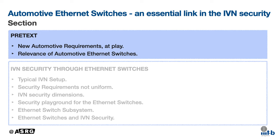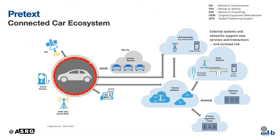Starting with the first section to understand new automotive requirements and the relevance of automotive Ethernet switches. First is the pretext of the connected car ecosystem. The representation here attempts to give a high-level view of the connected car ecosystem — in other words, the V2X, that is vehicle to everything. And when everything comes in, things are indeed not that simple. The present cars are also connected, but not so much to the extent of the rightmost section here, where a big cloud infrastructure allows for several connected services for the vehicle at run. High-speed technologies like automotive Ethernet and multi-gig Ethernet are enablers indeed.